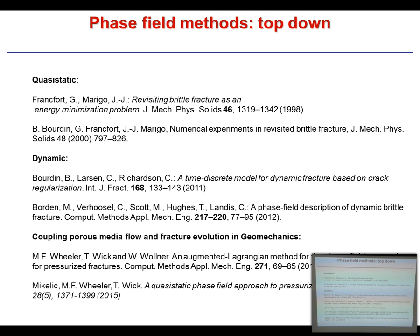Top-down models are now becoming called phase field models. You have one field to model the deformation in the body and a second field to model damage. Most of this is predicated on the Ambrosio-Tortorelli functional from image processing, which gamma-converges to linear elastic fracture mechanics. These researchers were able to understand fracture propagation in a quasi-static way using a two-field model in a very brilliant manner.